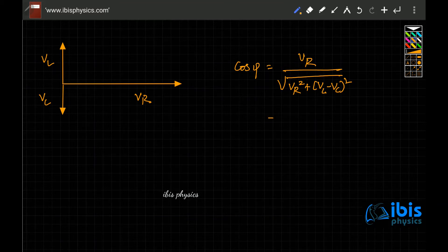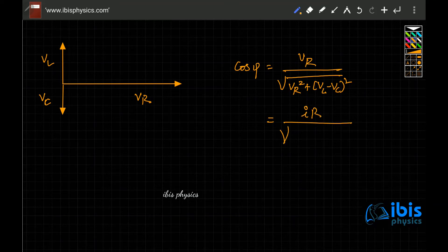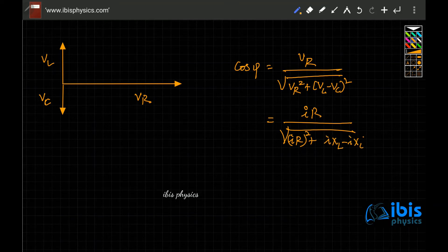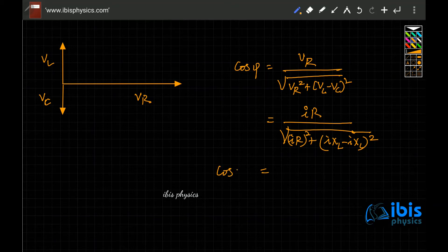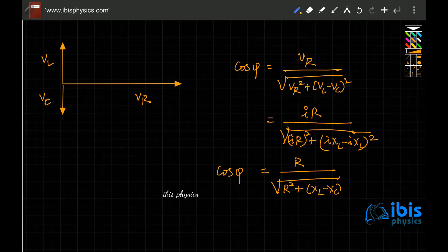We know that V is equal to IR. Since R, L, C, all are connected in series, so the current in every point is the same. VR is equal to I into R by root over VR square is IR whole square plus VL is IXL, IXC, so that is nothing but IXL minus IXC, where XL and XC are like inductive and capacitive reactances. When you take I and all the I's will be cancelled, so cos phi can be written as R divided by root over R square plus XL minus XC the whole square.